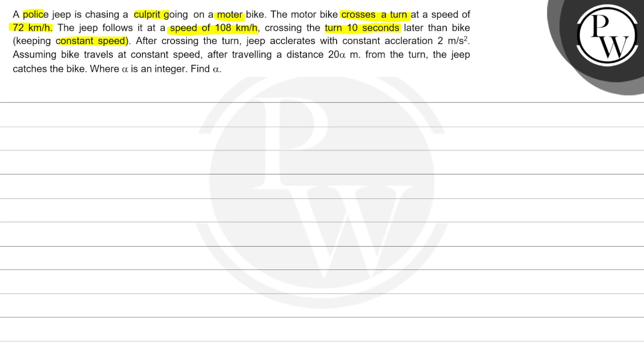Keeping constant speed, after crossing the turn, the jeep accelerates with a constant acceleration of 2 meter per second square. Assuming the bike travels at constant speed, after traveling a distance of 20 alpha meters from the turn, the jeep catches the bike, where alpha is an integer. Find the alpha.